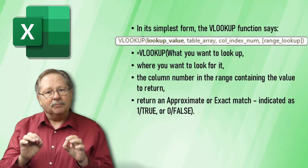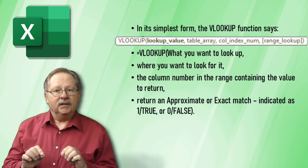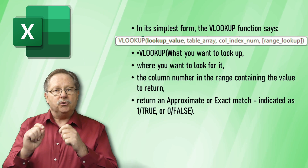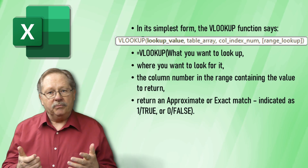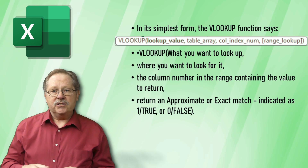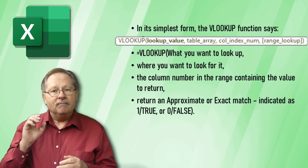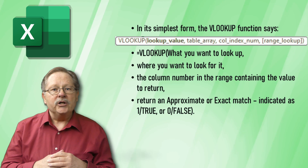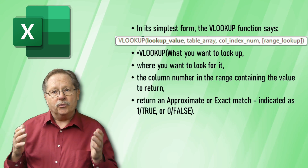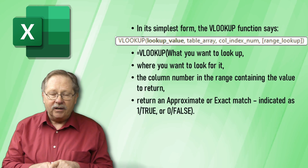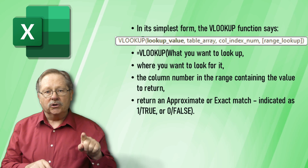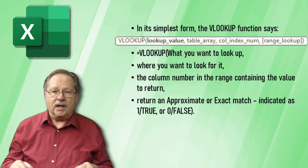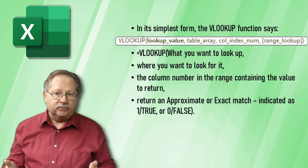VLOOKUP in its simplest form looks like this. The first reference is your lookup cell — you point it to the cell that you want to look up. This could be a drop-down list or a value that you type in. That's the value you're trying to look up in your table. Where you want to look up is next: it's an array of the information that contains the value to look up and the return answer.